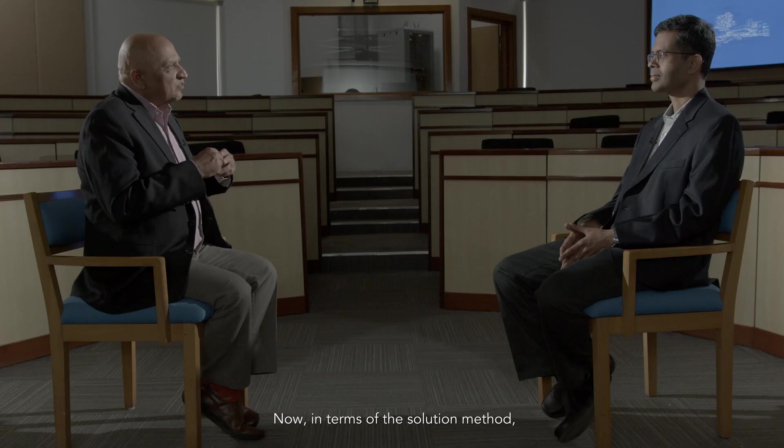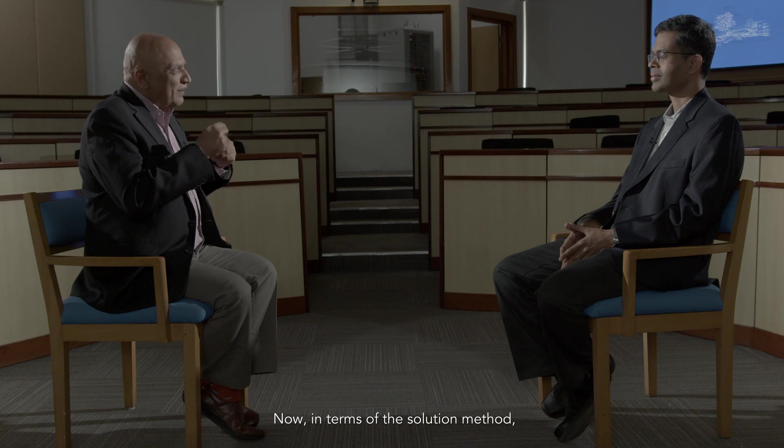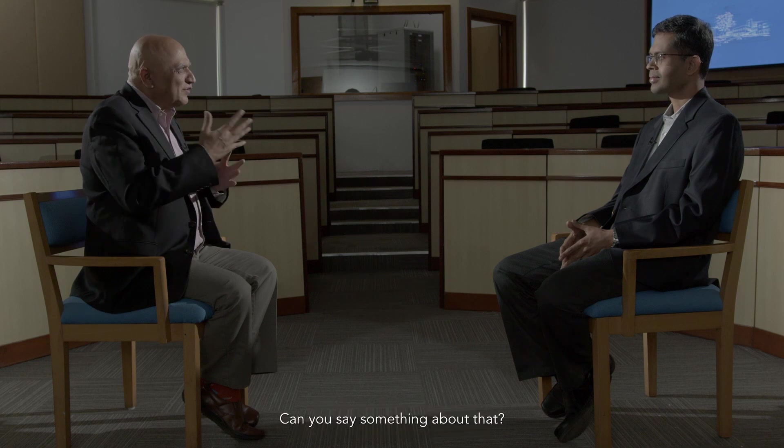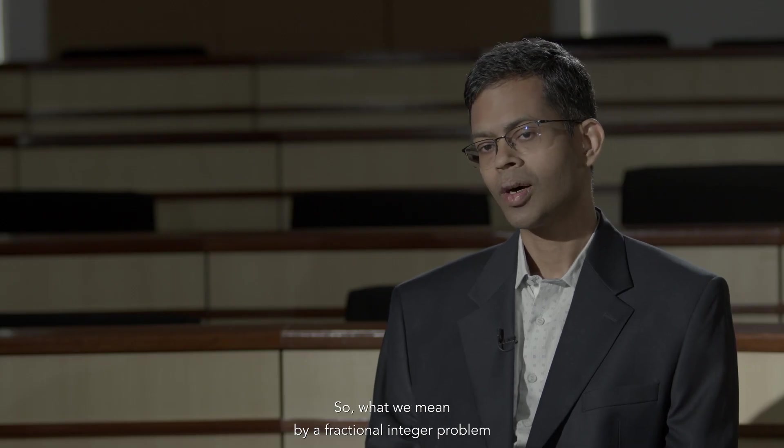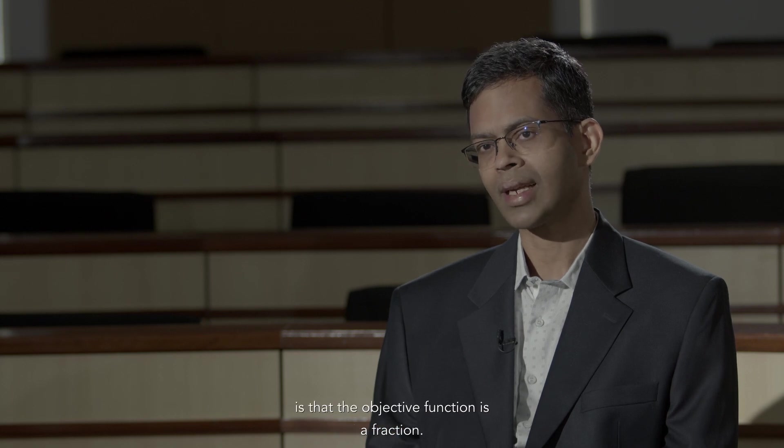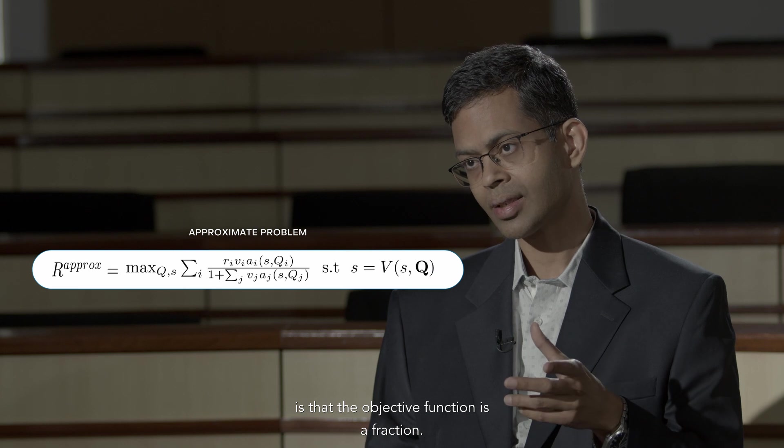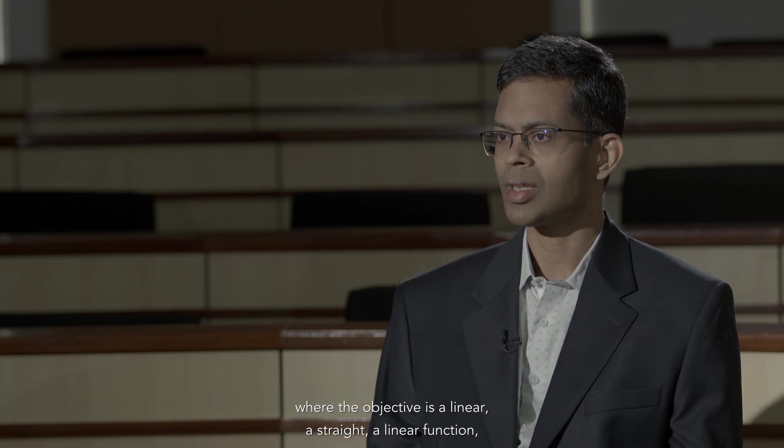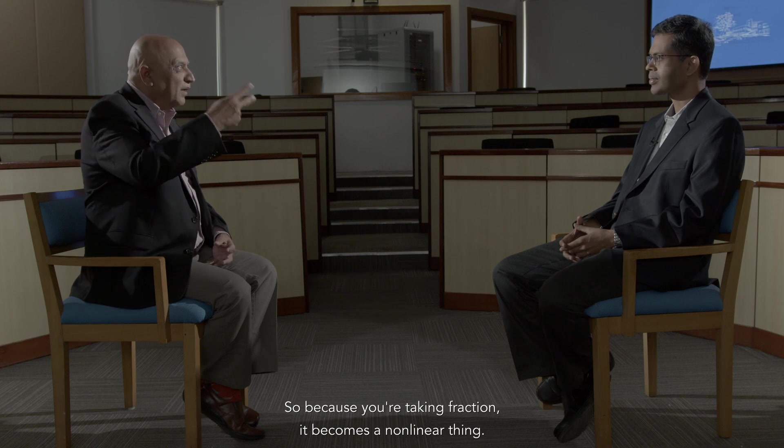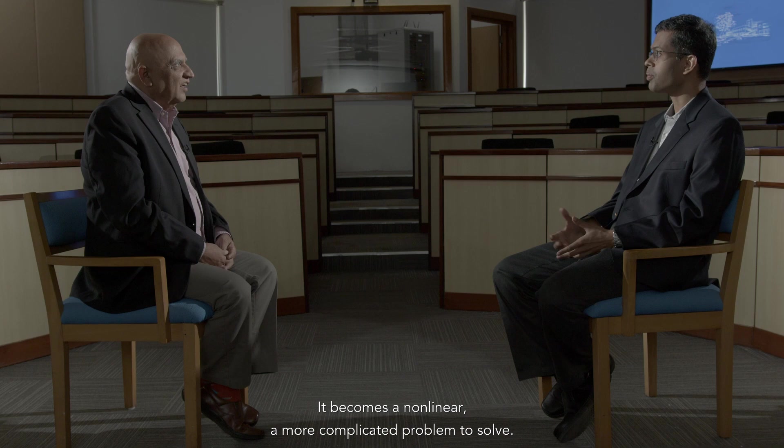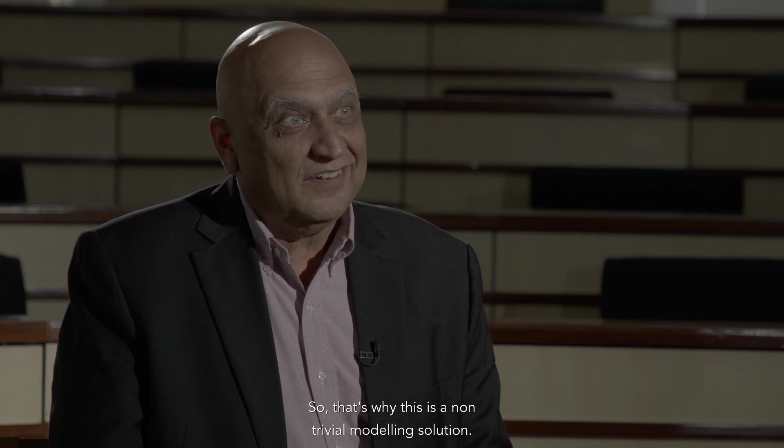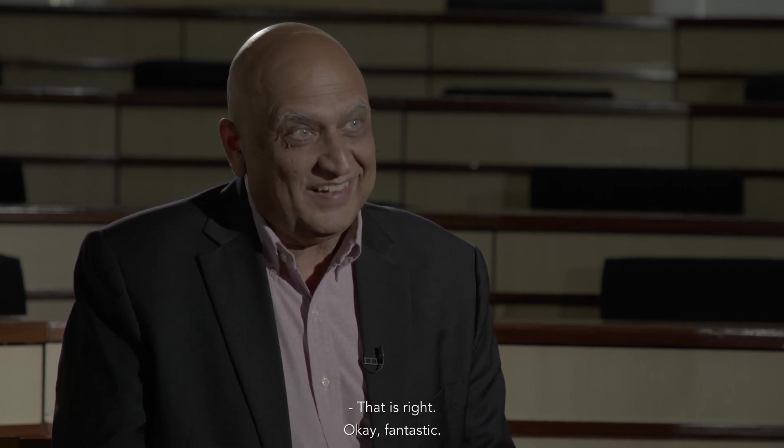Now, in terms of the solution method, this is what you're calling the fractional integer problem. Can you say something about that? Sure. So what we mean by a fractional integer problem is that the objective function is a fraction. It's a ratio of two terms, which is different from an easier optimization problem where the objective is a linear function, a straight line. So because you're taking fraction, it becomes a non-linear thing. It becomes a non-linear, a more complicated problem to solve. So that's why this is a non-trivial modeling solution.